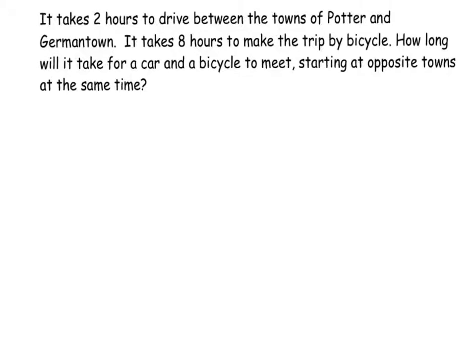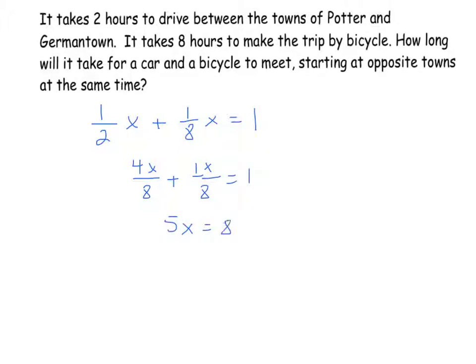It takes 2 hours to drive between Potter and Germantown and 8 hours by bicycle. How long will it take for a car and bicycle to meet starting at opposite towns at the same time? Setting up the equation: 1 half times x plus 1 eighth times x equals 1 distance. Finding a common denominator gives 4x over 8 plus x over 8 equals 1, so 5x equals 8 and x equals 8 fifths, or 1 and 3 fifths of an hour.